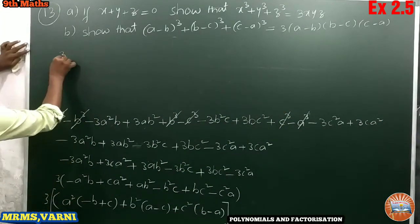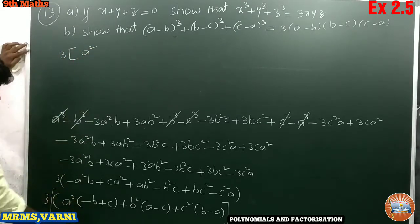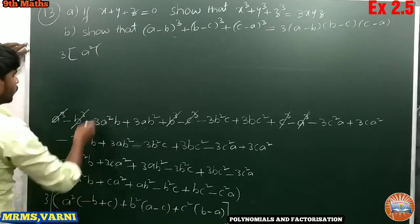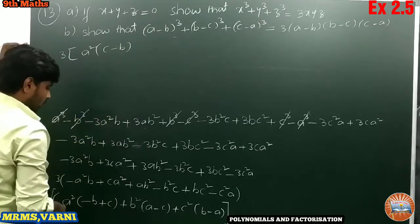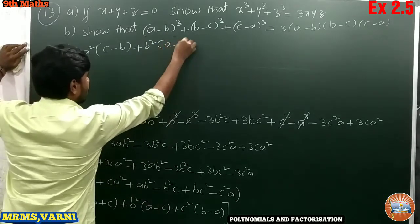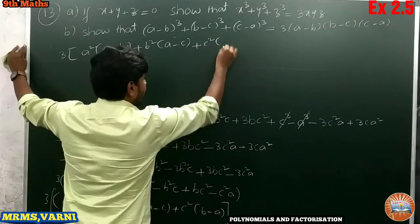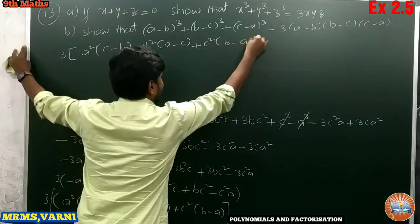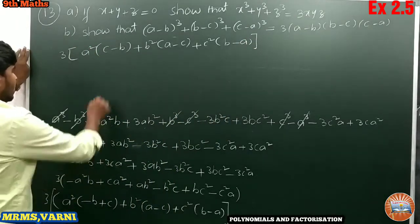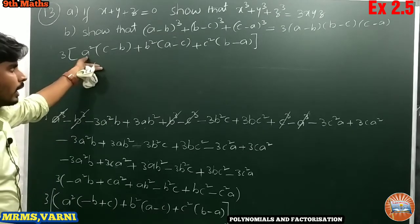So we can write this as 3 into: a squared into c minus b, plus b squared into a minus c, plus c squared into b minus a. This is the expansion of the LHS term.